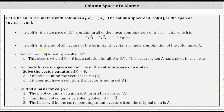The column space of A is the set of all vectors of the form A times vector x, since A times vector x is a linear combination of the columns of matrix A. Sometimes the column space of A will span all of R m. This occurs when A times vector x equals vector v has a solution for all vectors v in R m, which happens when A has a pivot in each row.